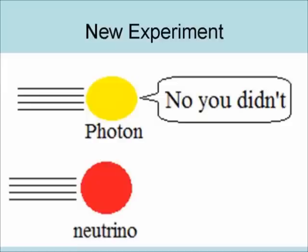Now, a new experiment has confirmed existing suspicions that the neutrinos did not go faster than the speed of light.